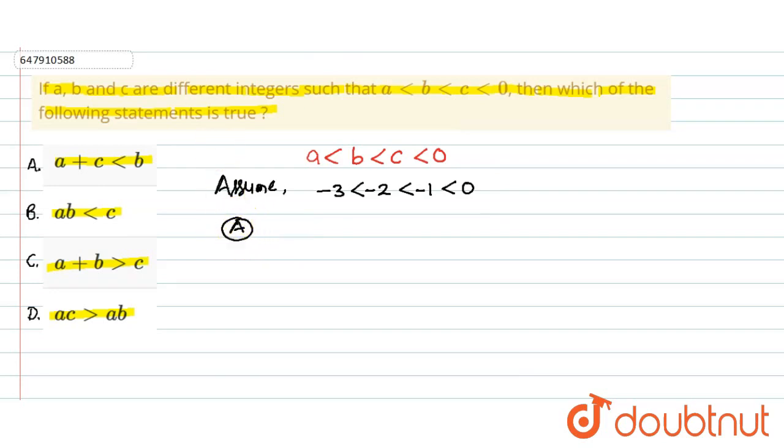We will check the option and look at this value. Option A says A plus C less than B. A ki value kitni hai? Minus 3 plus C. C ki value minus 1, less than B. B ki value minus 2. So minus 4 minus 2 se chota hoga. This statement is right.